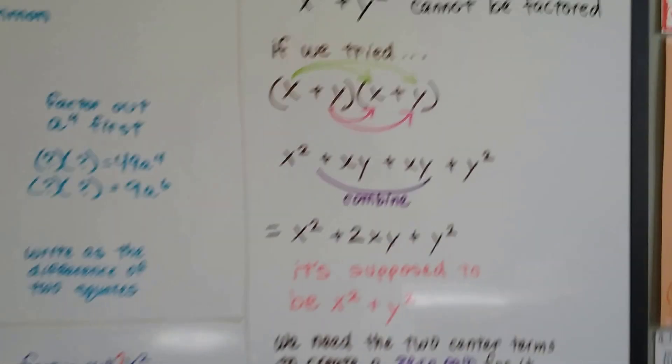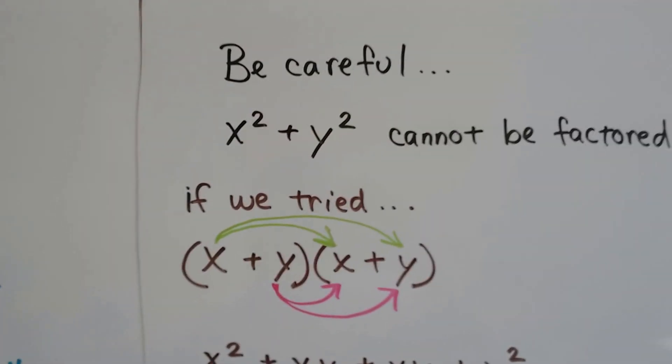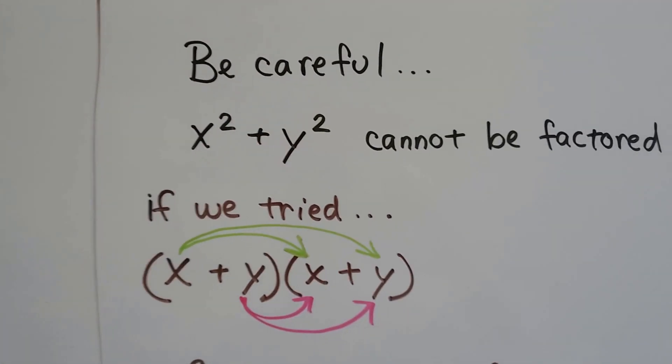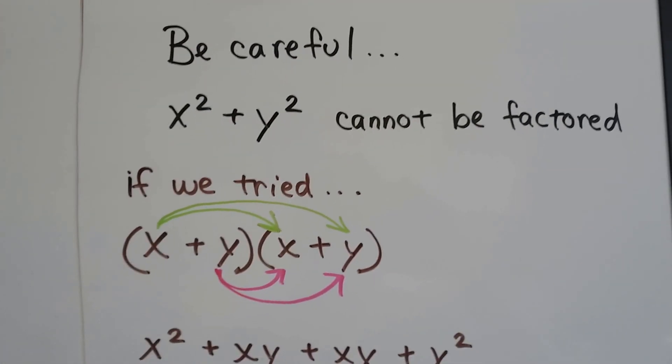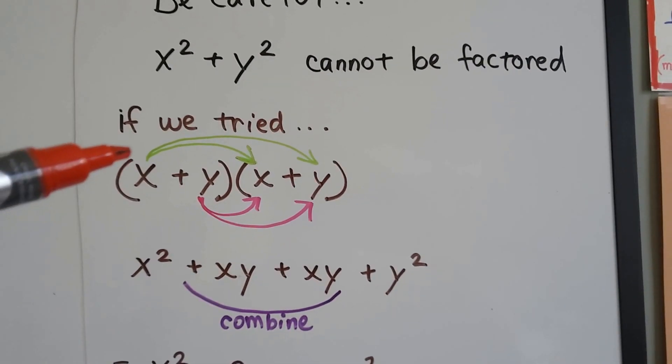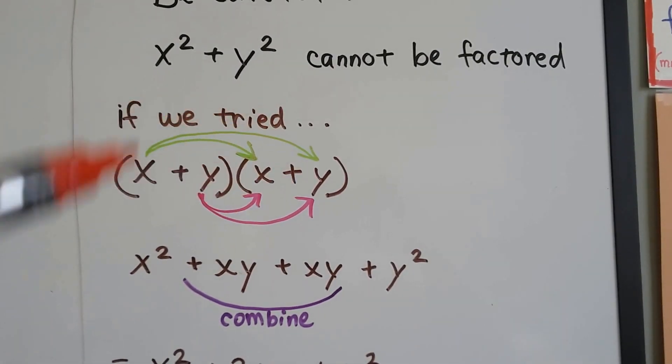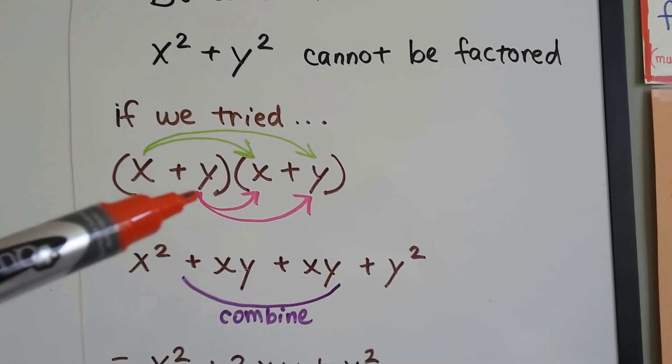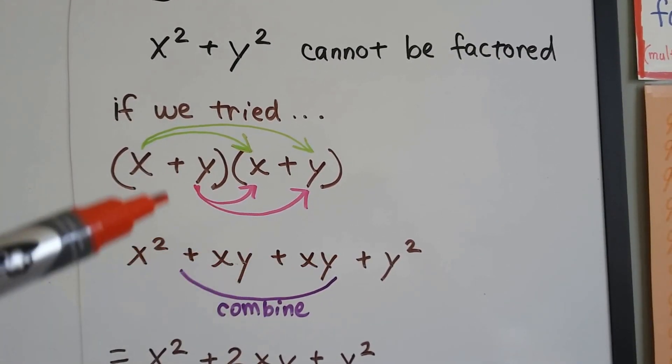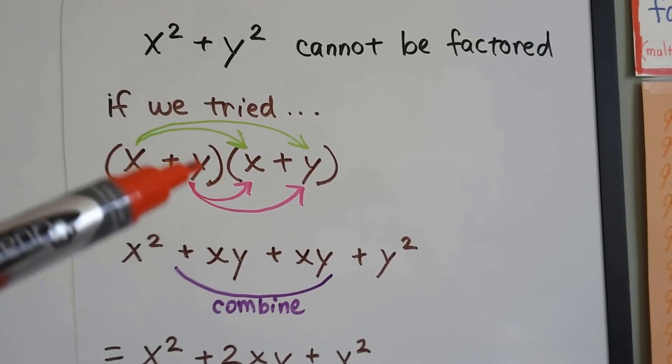Now, I want you to be careful. If you see x²+y², this can't be factored. If you tried to do it and you did FOIL method, we would end up with x², and then xy, and then because these are both addition, it would all be plus, and then we'd have yx, but we'd write them in alphabetical order, so that would be xy again.